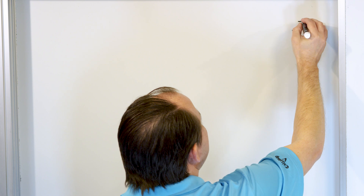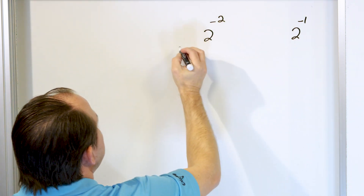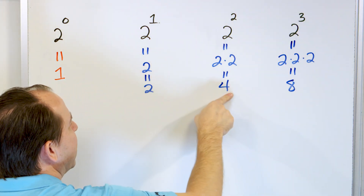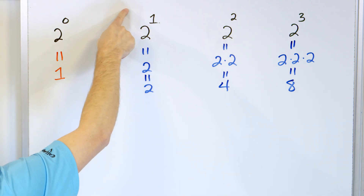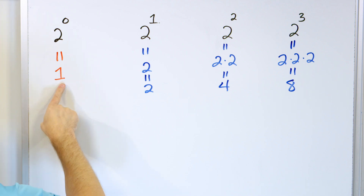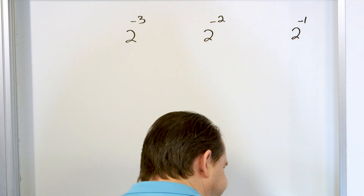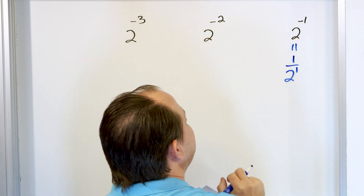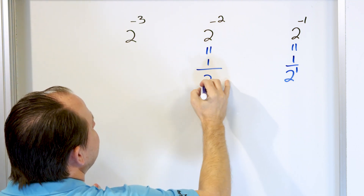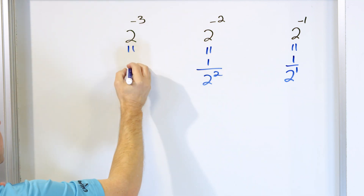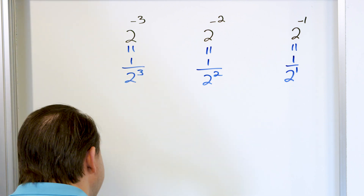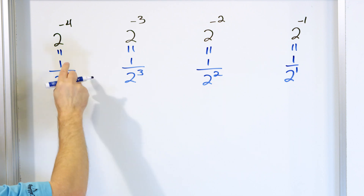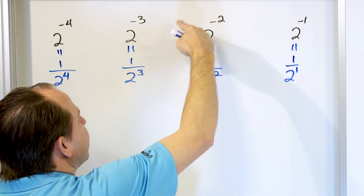We're going to skip past two to the zero and go to two to the negative one, two to the negative two, two to the negative three, and two to the negative four. As we go from two cubed down, the actual answer gets smaller each step. We go down to the zero power — the answer is one. When we go below that, it should be something less than one. By definition, two to the negative one is 1 over two to the first. Two to the negative two is 1 over two to the second power. Two to the negative three is 1 over two to the third power. Two to the negative fourth power is 1 over two to the positive fourth. So anytime you see a negative exponent, train yourself: it goes into the denominator and becomes positive.